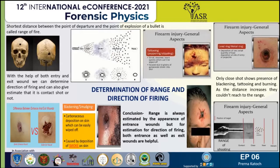But if the direction of firing is upward or slant, then the abrasion collar is made on the lower side of the center and GSR is found on the lower side of the abrasion collar. In mathematical terms, if the bullet enters at 90 degrees, then the shape of the abrasion is round. If the entry is at 45 degrees, then the shape of the abrasion is oval. This is how we can estimate the direction of firing. The grease collar also tells about the direction of firing.